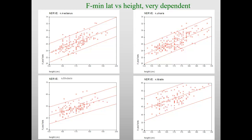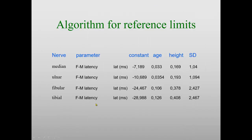Here are the different graphs for the dependence on height. In real life, we combine the two with an algorithm. So the median nerve F-latency is equal to a constant, plus 0.03 times age, plus 0.0617 times height, and a standard deviation of so and so. You can see that the height dependency is not so strong for arm nerves, but in the leg nerves it is much stronger.